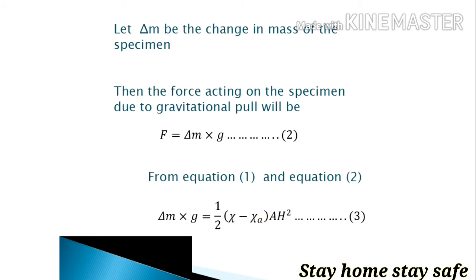Now let Δm be the change in the mass of the specimen. Then the force acting on the specimen due to gravitational force, gravitational pull, will be F equals Δm times g.